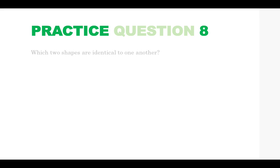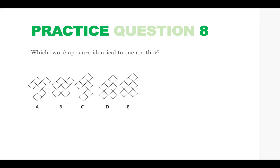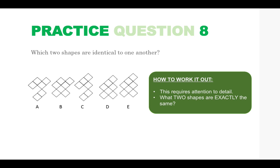Practice question 8. Which two shapes are identical to one another? So these are relatively easy questions. You just need to spot which two answers look exactly the same. And you should be able to spot fairly quickly that answers D and E are the same. As you can see they all look quite similar but you need to make sure that they are in exactly the same position as each other.